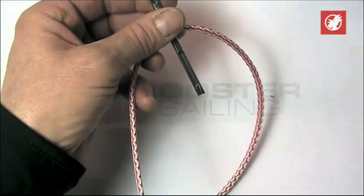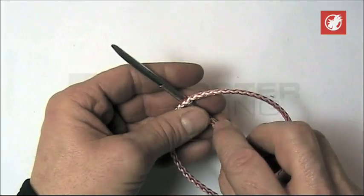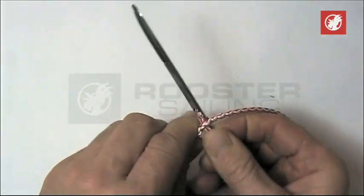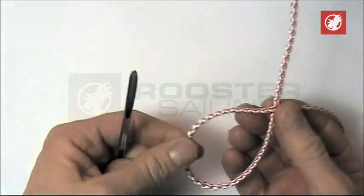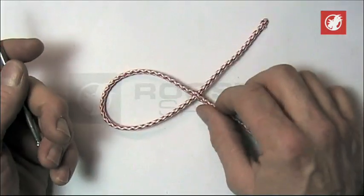Feed the rope through the center, out the other side. Once I've got about the right size of loop I want to put in the rope.